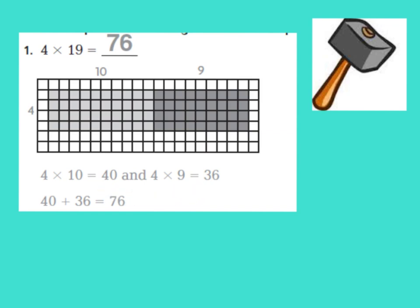To get our final product, we need to add them together. 40 plus 36 equals 76. And that's how they were able to solve 4 times 19 using the distributive property.